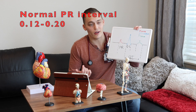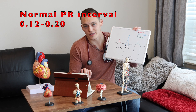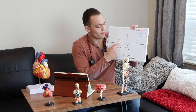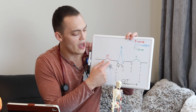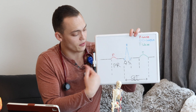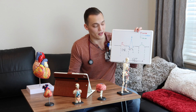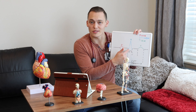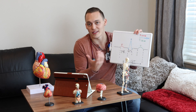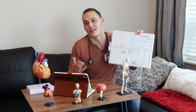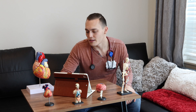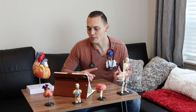Normal is anywhere from 0.12 to 0.20 seconds. In a first-degree AV block, the P wave is going to be way far from the QRS complex, versus a normal sinus rhythm where the P wave is right next to the QRS and within that 0.12–0.20 second threshold. We're now going to pop up an ECG on screen showing normal sinus rhythm and a first-degree AV block.